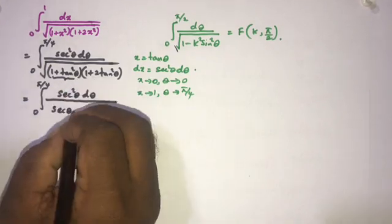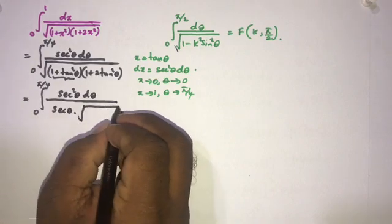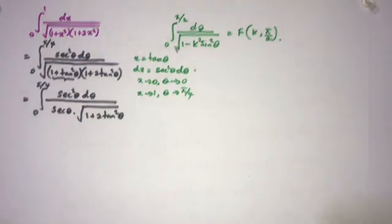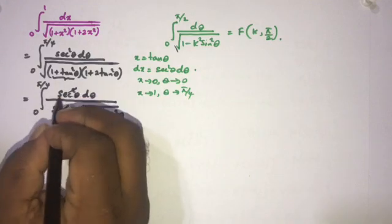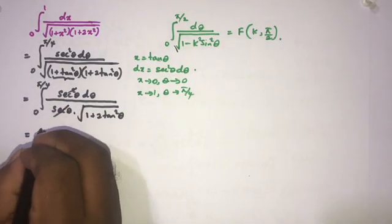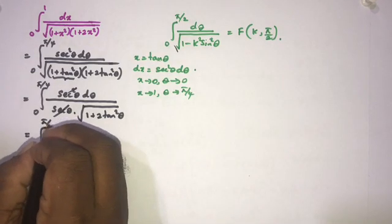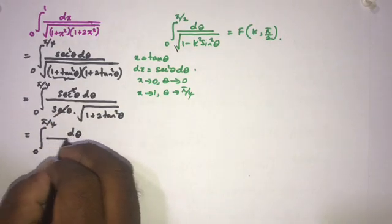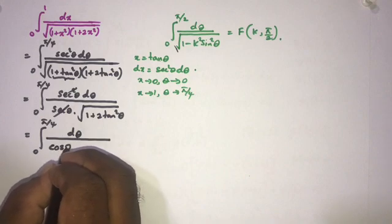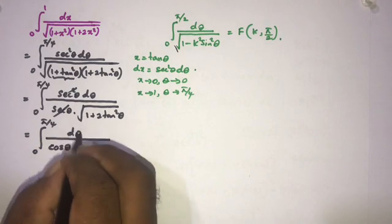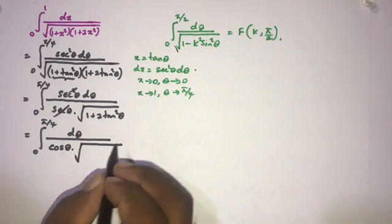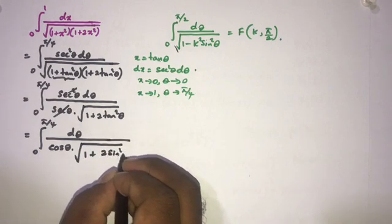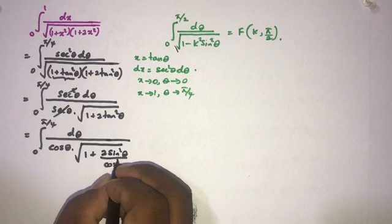In the square root we have 1 plus 2 tan²(θ). The sec(θ) terms cancel, and we can write the integral from 0 to π/4. We write sec(θ) as 1/cos(θ), so we have cos(θ) in the numerator and the square root of 1 plus 2 tan²(θ), where tan²(θ) = sin²(θ)/cos²(θ).